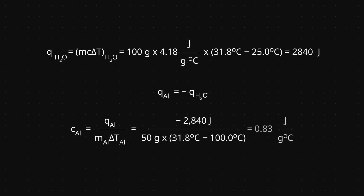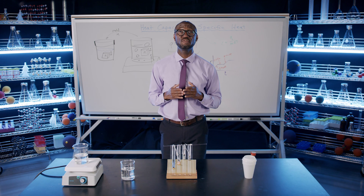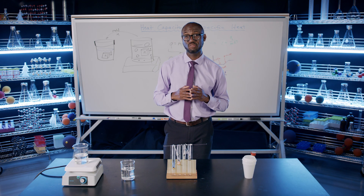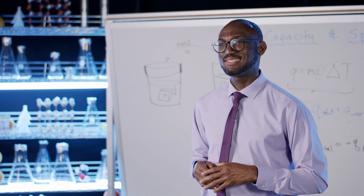Therefore, the heat of aluminum is equal to negative 2840 joules. We can then use that value to calculate the specific heat of aluminum, which is 0.83 joules per gram degree Celsius. Since some heat inevitably escapes during this process, our experimental value is a little bit lower than the known specific heat, which is 0.9 joules per gram degree Celsius.